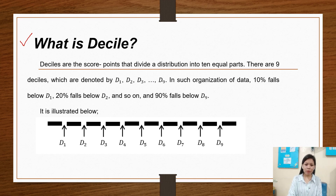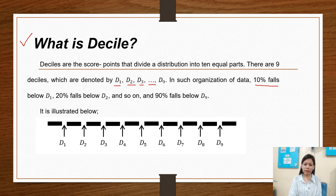What is decile? Deciles are the score points that divide a distribution into 10 equal parts. There are 9 deciles which are denoted by D1, D2, D3, D4, D5, D6, D7, D8, and D9. In such organization of data, 10% falls below D1, 20% falls below D2, and so on, and 90% falls below D9.